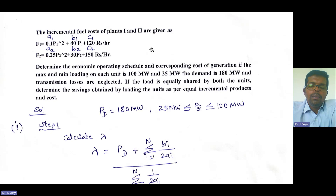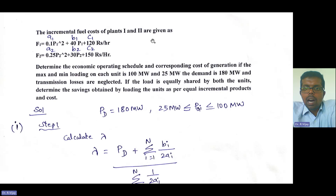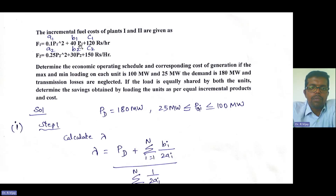Good morning, one and all. Take down this problem. Today, we are going to solve economic load dispatch for two generating units. The incremental fuel cost of plant one and two are given as F1 is equal to 0.1 P1 squared plus 40 P1 plus 120 rupees per hour.